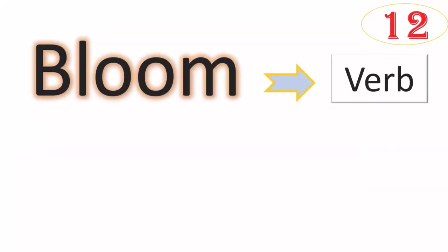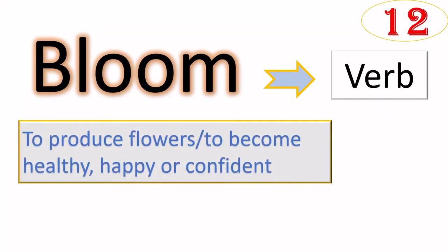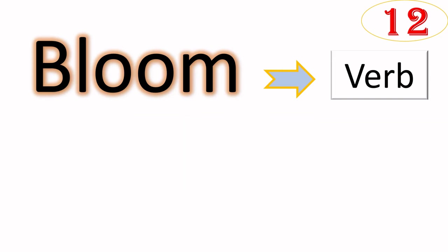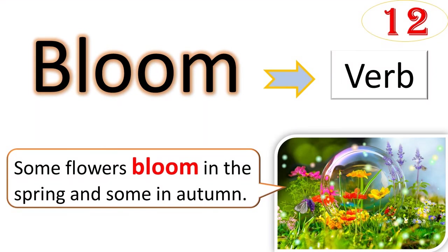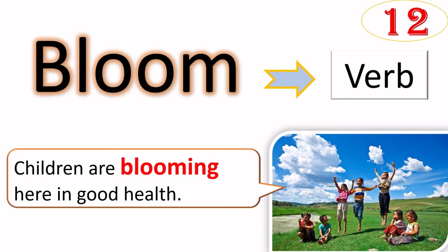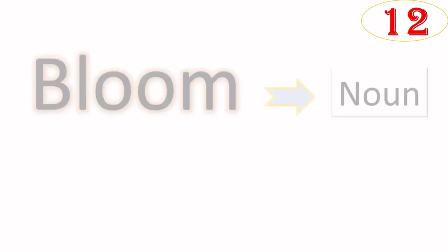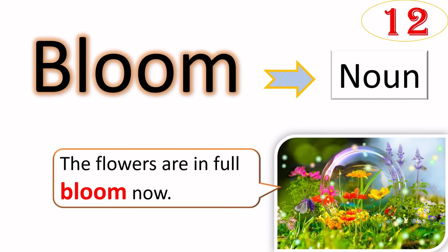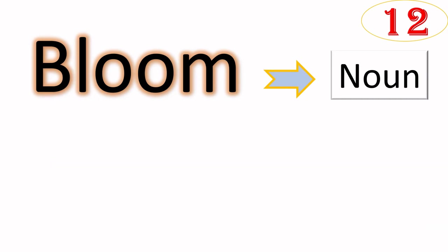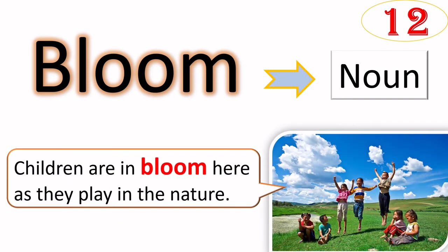Bloom as verb means to produce flowers or to become healthy, happy, or confident. For example, some flowers bloom in the spring and some in autumn. Another example can be children are blooming here in good health. When we use the word bloom as noun, its meaning is similar. An example can be the flowers are in full bloom now. Children are in bloom here as they play in the nature.